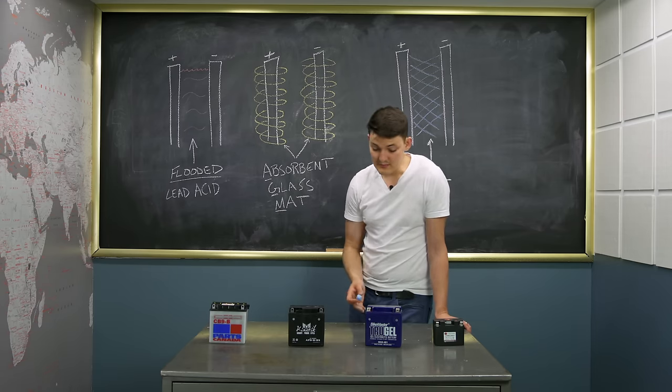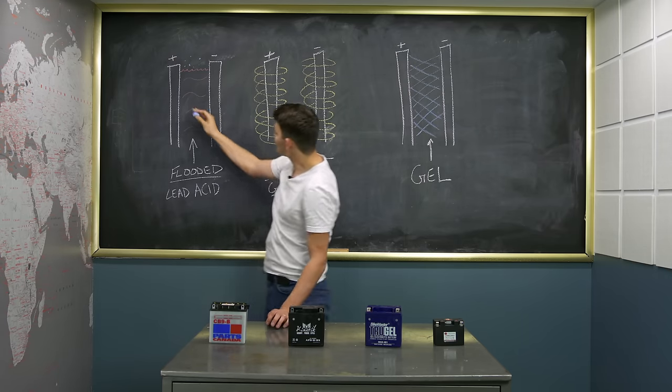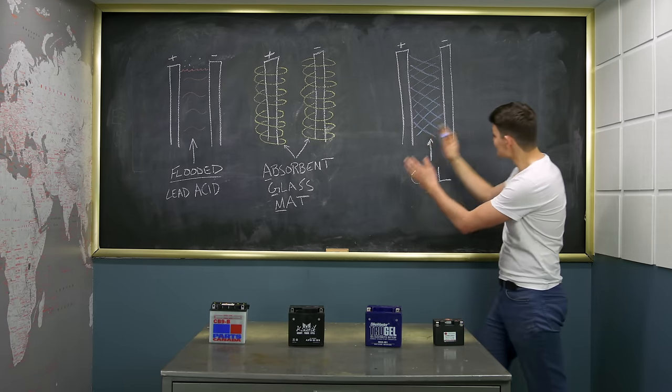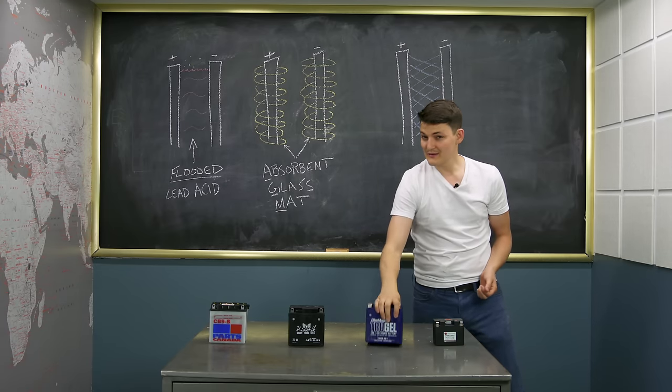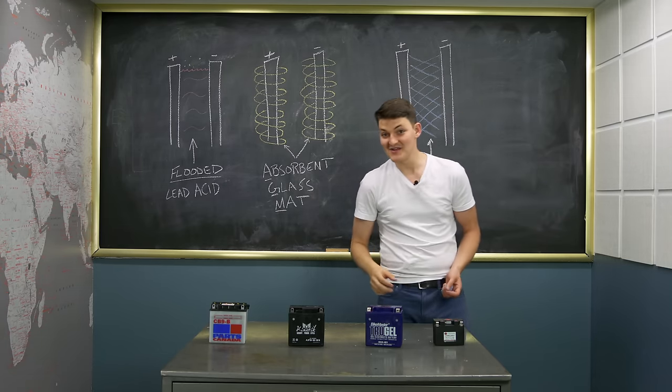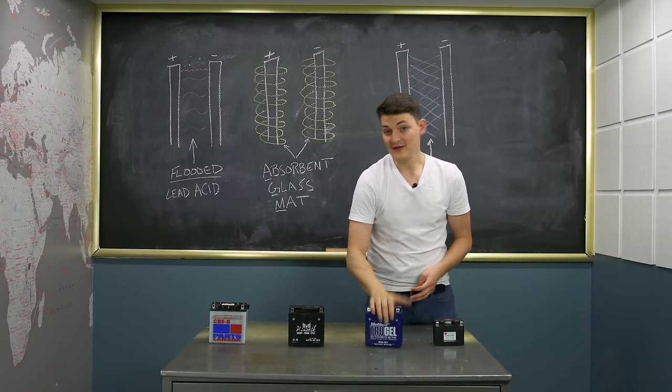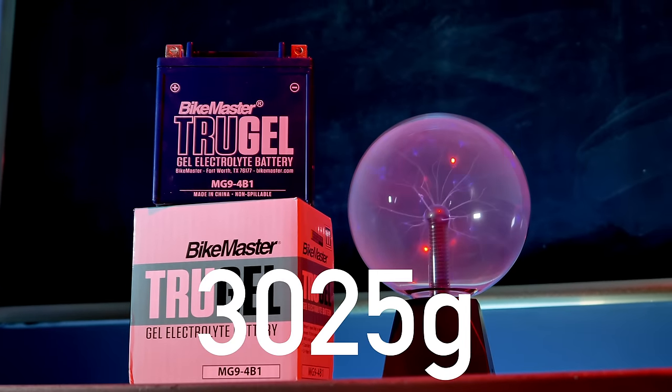For 130 bucks, Bike Master will sprinkle some silica into the battery to gelatinize the acid. So gel batteries are also spill proof, but without needing to wear furry fiberglass underwear like an AGM. This should be cooler in hot weather, though slightly heavier. 3,025 grams.